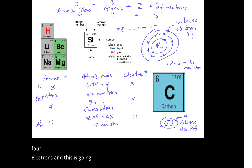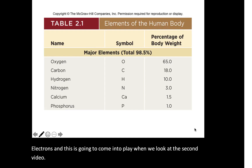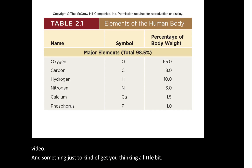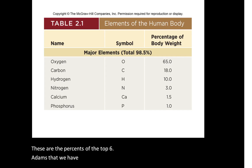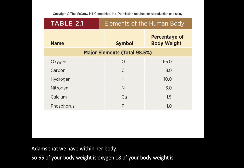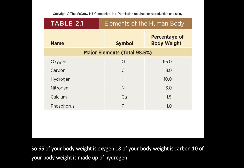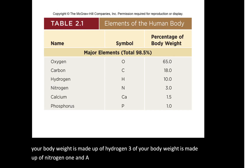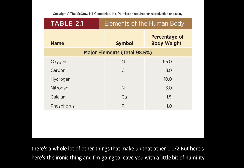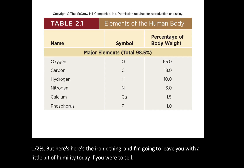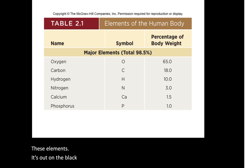Something just to get you thinking a little bit: these are the percentages of the top six atoms within our body. 65% of your body weight is oxygen, 18% is carbon, 10% is hydrogen, 3% is nitrogen, about 1.5% is calcium, and about 1% is phosphorus, with a whole lot of other things making up that remaining 1.5%.